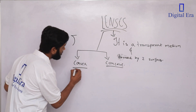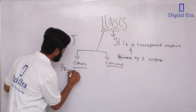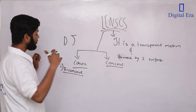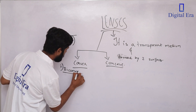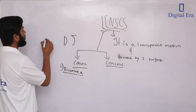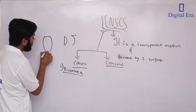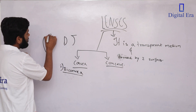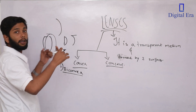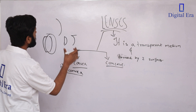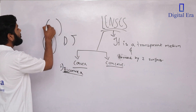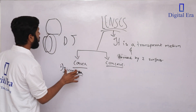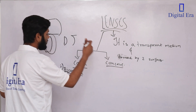In lenses, there are 2-3 types. First is biconvex. A biconvex lens means both sides are puffed outward — slightly bulging on both sides. That is called a biconvex lens. What is a biconcave lens? Biconcave means both sides are curved inward — dono taraf se andar ki taraf.